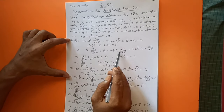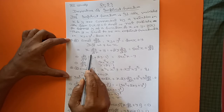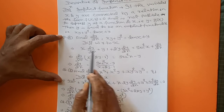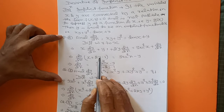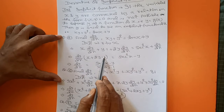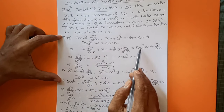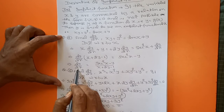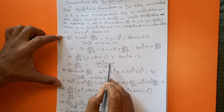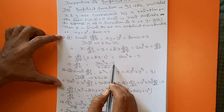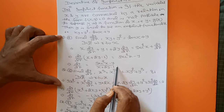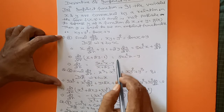Now take dy/dx common on the left-hand side: dy/dx · (x + 2y − 1) = 10 − y. Therefore, dy/dx = (10 − y) / (x + 2y − 1). This completes the differentiation of this problem.